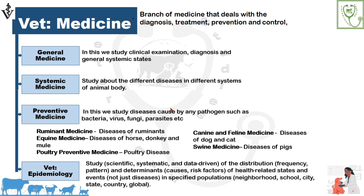Veterinary epidemiology is the study of the animal population at the time of an outbreak of disease. More precisely, it is the study of the distribution and determinants of health-related states and events in a specified population. For example, if there is an outbreak of any disease in an animal population in a particular area, the study of that outbreak — including how much area is affected, what the source of infection is, and how the disease is transmitted — is called epidemiology.